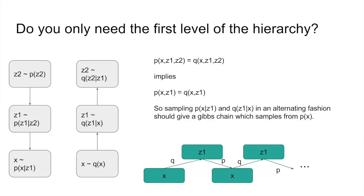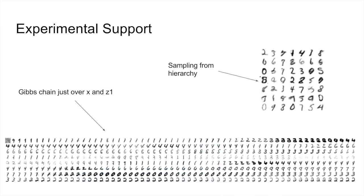Experiments shown with hierarchical variational autoencoders support this claim. Just running a block Gibbs sampling chain between the visible space and the lowest level of latent variables seems to be sufficient for sampling from the distribution.